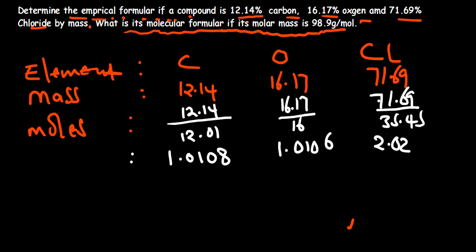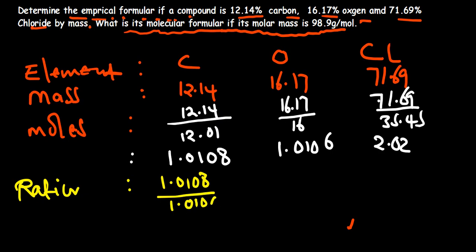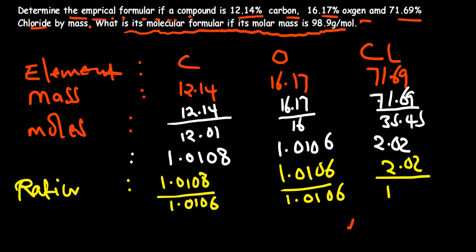Now you ask yourself: between these three, which one is the smallest? We see that 1.0106 is the smallest — this one ends in 8, this one ends in 6, so that one is the smallest. We are going to divide all these moles by that smallest number. So the ratio equals 1.0108 divided by 1.0106, then 1.0106 divided by 1.0106, then 2.02 divided by 1.0106.